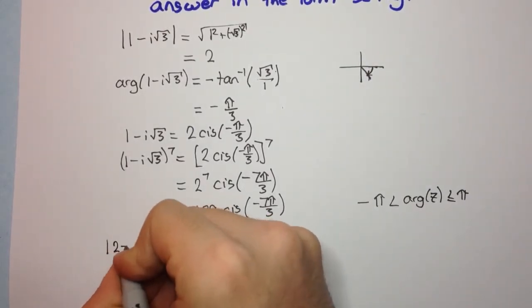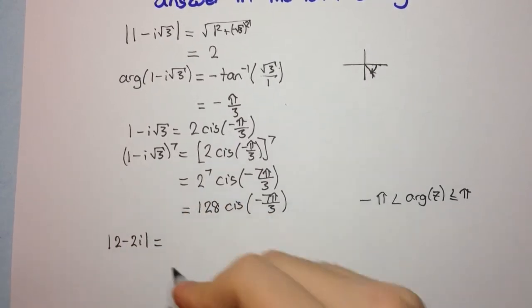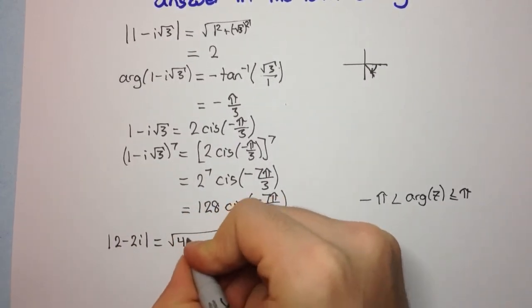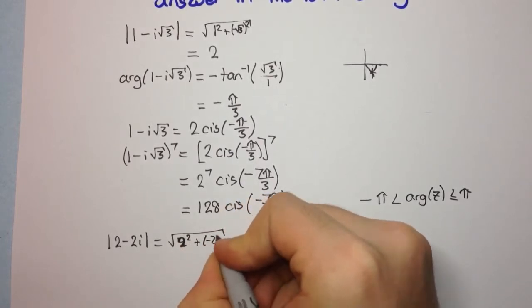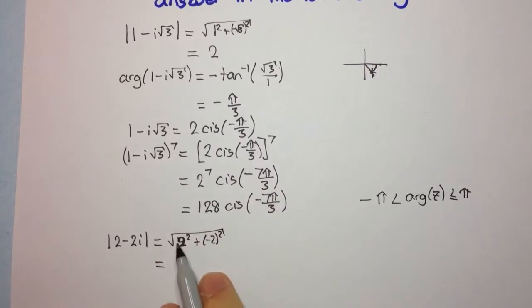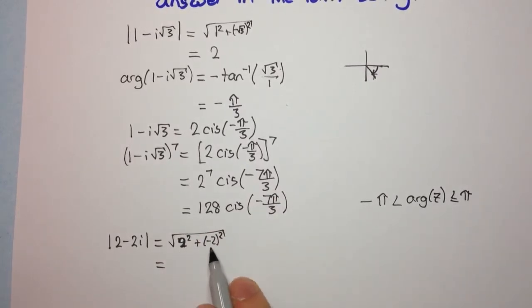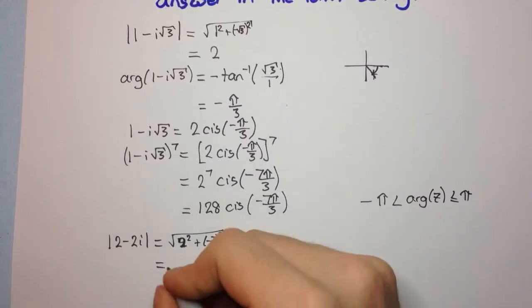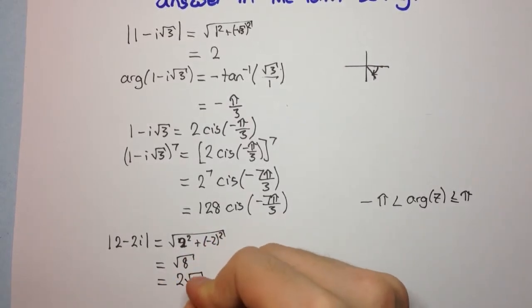So we have the modulus of 2 - 2i. That's going to be equal to the square root of the real part squared, of 2, plus minus 2 squared. So 2 squared is 4, and minus 2 squared is 4, so we're going to have 4 plus 4, which is square root of 8. And square root of 8 is 2√2.